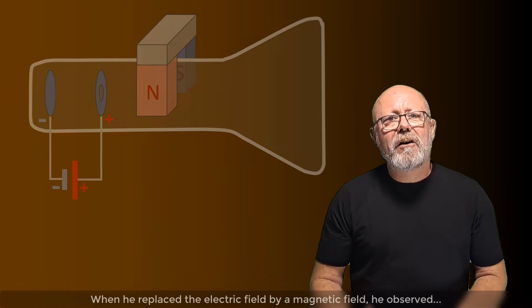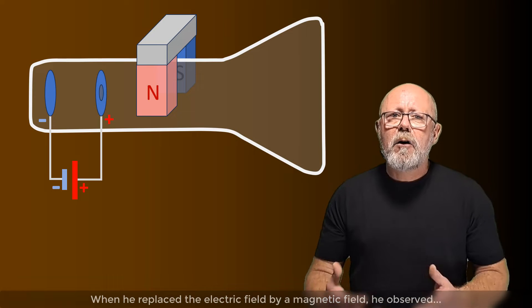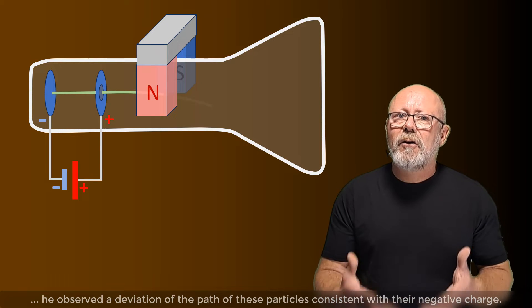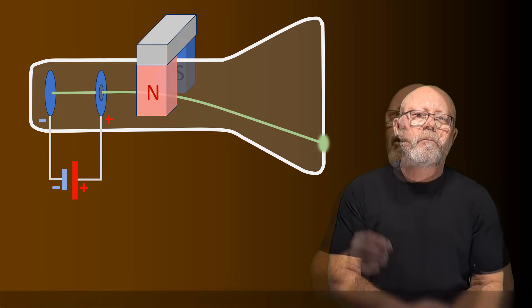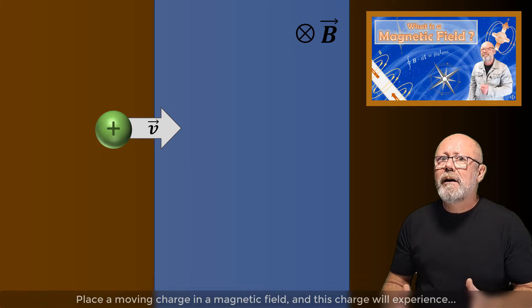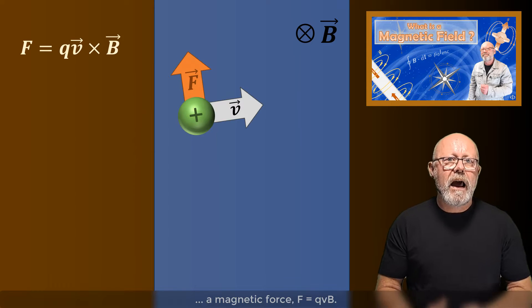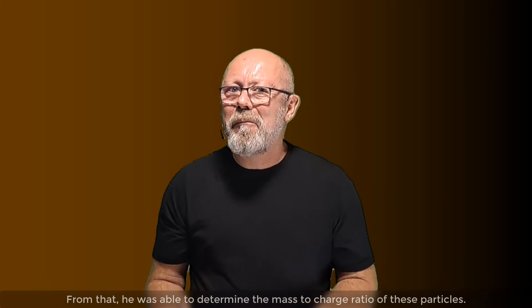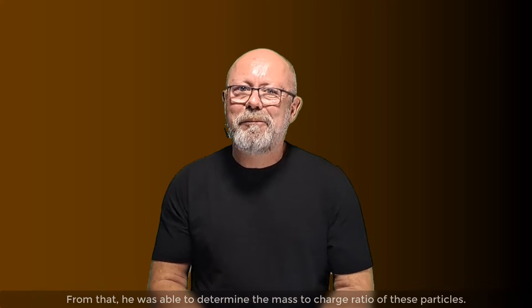When he replaced the electric field by a magnetic field, he observed a deviation of the path of these particles consistent with their negative charge. Remember this video: place a moving charge in a magnetic field and this charge will experience a magnetic force F equals QVB. From that, he was able to determine the mass to charge ratio of these particles.